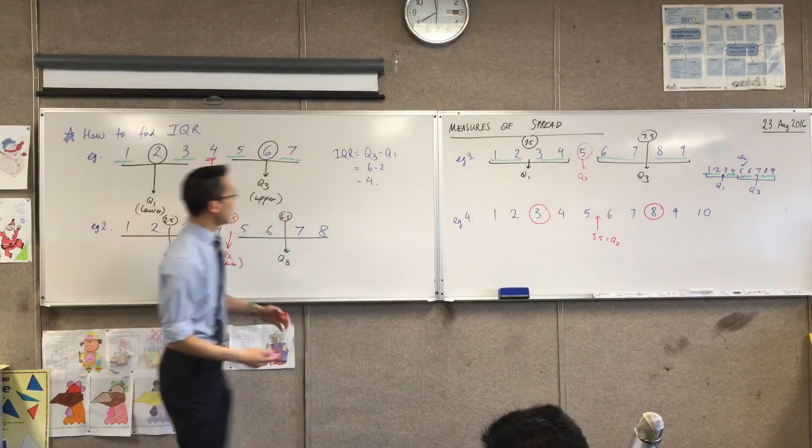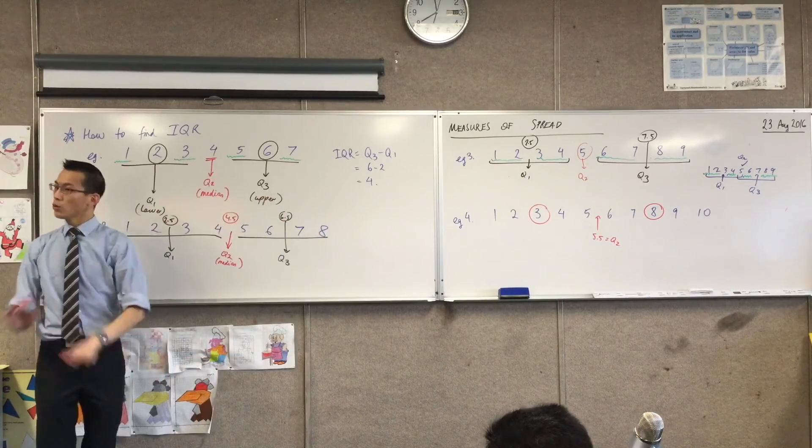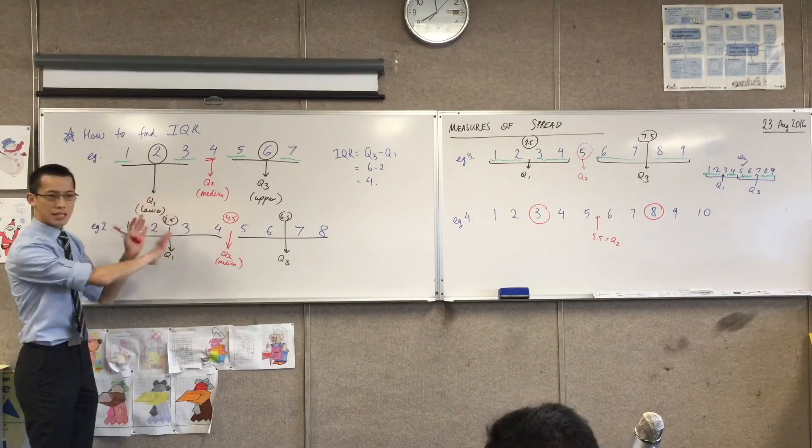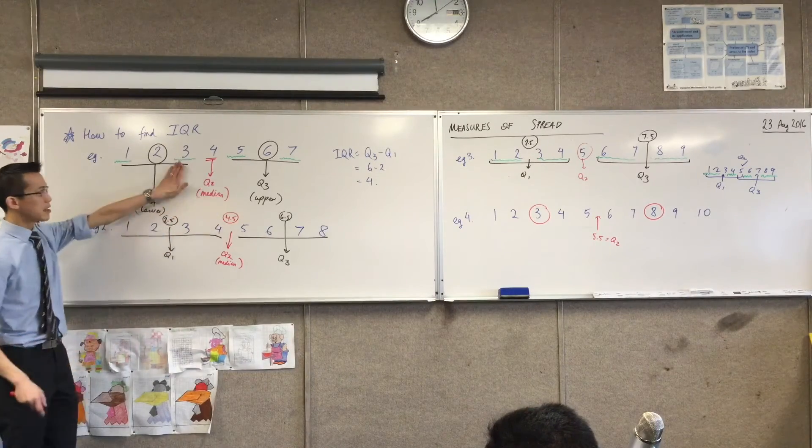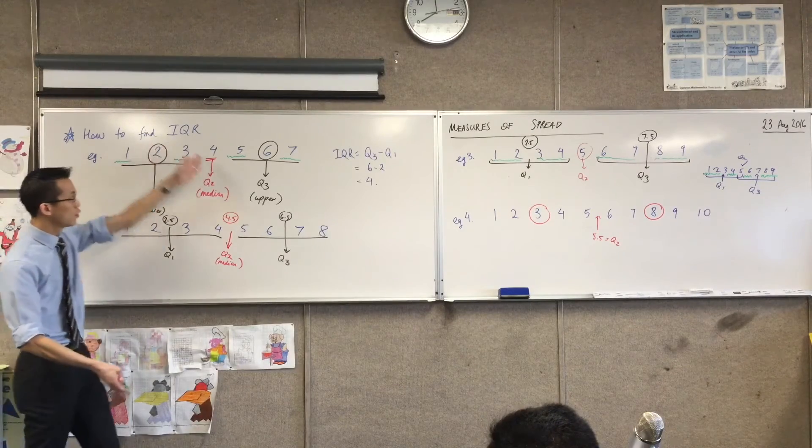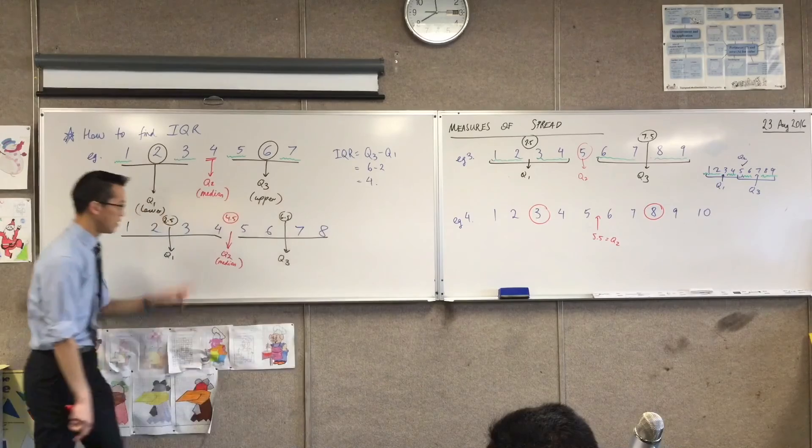Okay, so you're getting the hang of it. These four examples, they're all the ones you need to do because if you do the next one, have a look. Do you see there's a pattern? This first one, the quartiles all land on scores. 2, 4, 6.